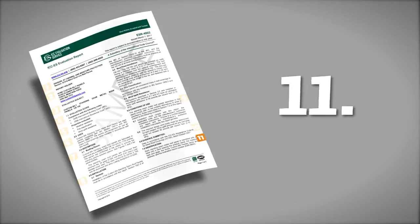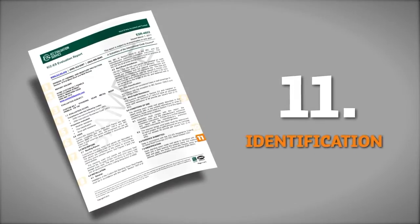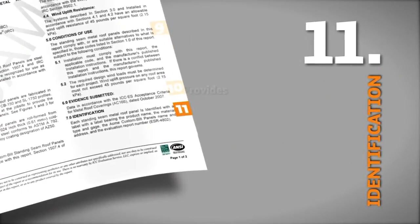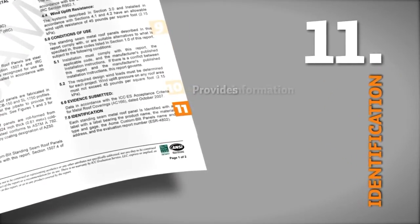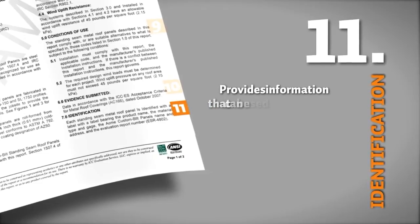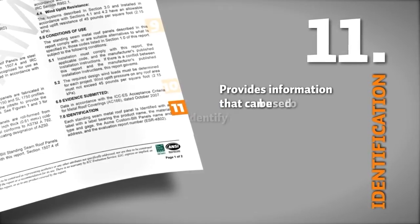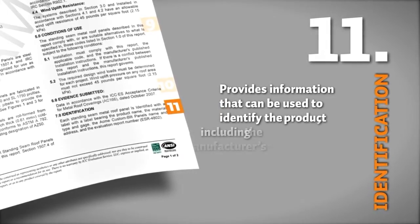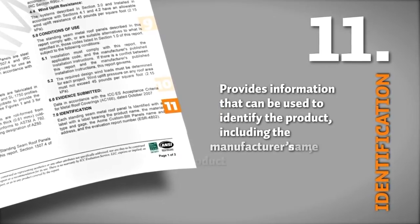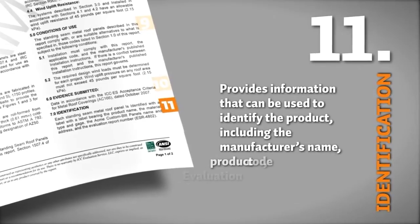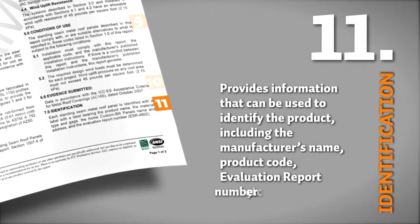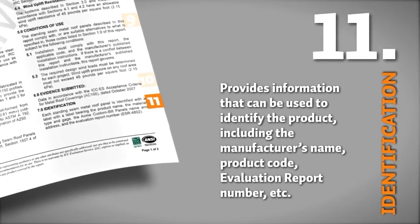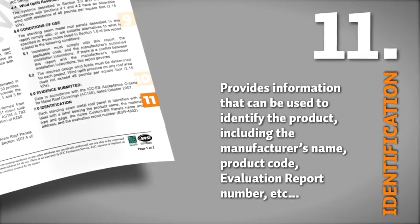11. Identification. Finally, this section provides information that can be used to identify the product, including the manufacturer's name, product code, evaluation report number, etc.